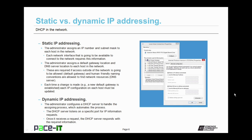Each time a change is made, as in a new default gateway is established, each IP configuration on each host must be updated. That's why it becomes rather cumbersome and complicated as the network grows. With dynamic IP addressing, the administrator configures a DHCP server to handle the assignment process, which automates the process and eases management. The DHCP server listens on a specific port for IP information requests, and once it receives a request, the DHCP server responds with the required information.